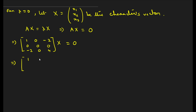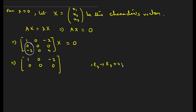The first row is fixed: 1, 0, −2. The second row is already 0, 0, 0, so it stays. For the third row, we need to make the element −2 into 0 using the first row. We apply R3 → R3 + 2R1. This gives: the first element becomes 0, the middle stays 0, and 4 + (2×−2) = 0. So the third row becomes all zeros.